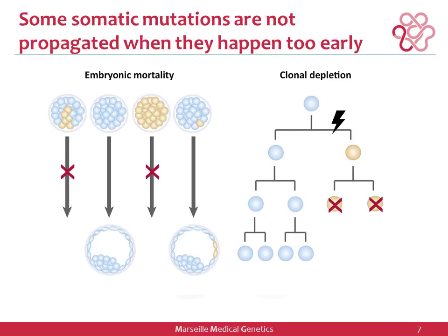Some somatic mutations are not propagated when they happen early on; they can lead to embryonic mortality if too many cells carry the mutation, but if only a few carry it, it is tolerated. Placentas are found to carry somatic mutations extremely frequently. It can also happen that cells descended from the mutant cell are not viable later on, leading to depletion of those clones in what would have been a mosaic organism — and you would never know because ultimately no cells carry the mutation.